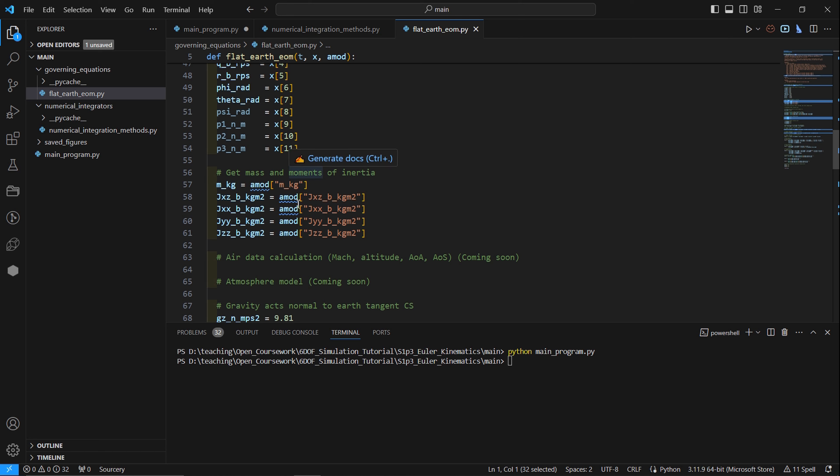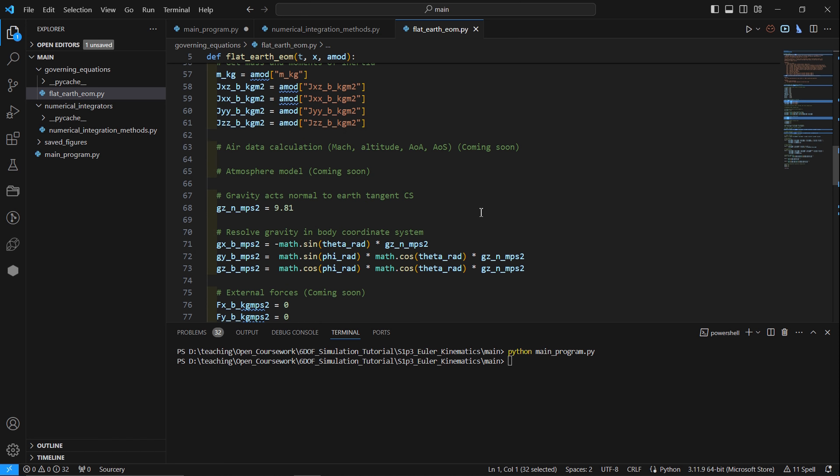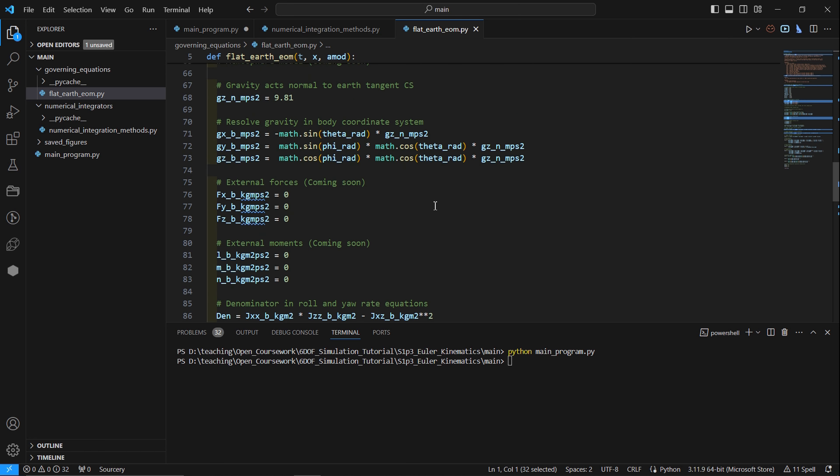To return that efficiently, we pre-allocate the dx vector. It has dimension 12. And to be very transparent about how we're implementing the equations, we take the state vector x and we assign a variable with the name, the coordinate system, and the units to those individual elements of x. We get our mass and moments of inertia. We still have placeholders for our air data and atmospheric model. Our gravity is normal to the earth tangential system. So it's just pointing down. And then we resolve it in the body coordinate system.